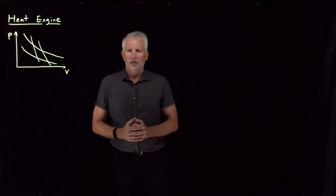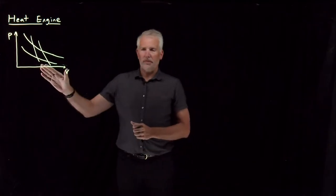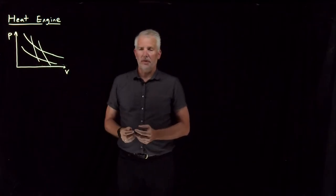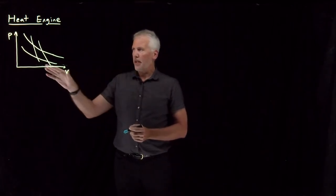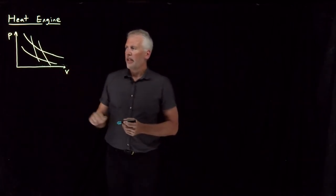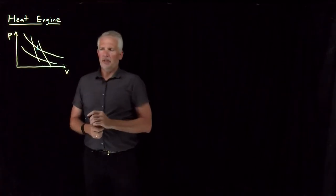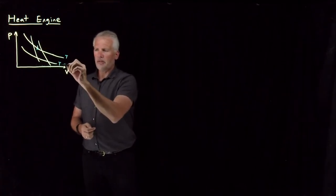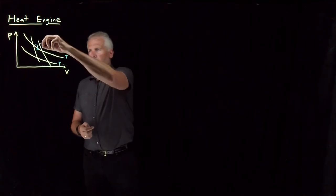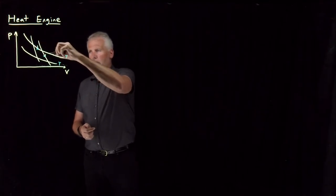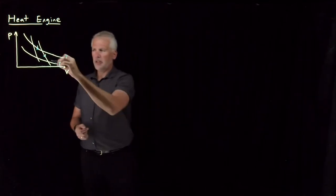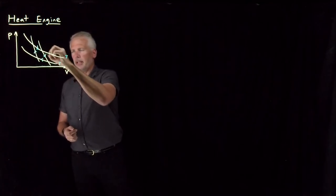All right, so we understand now the Carnot cycle, which I've drawn a little sketch of over here. The idea behind the Carnot cycle is I do a reversible isothermal expansion. So this is an isotherm, here's another isotherm. Isothermal expansion followed by a reversible adiabatic expansion, and then an isothermal followed by an adiabatic compression.